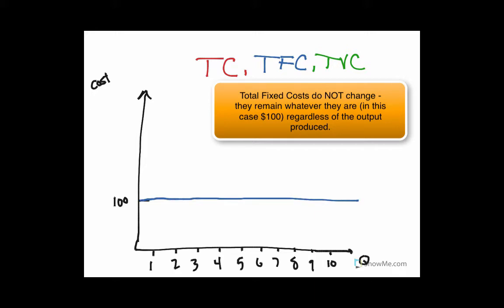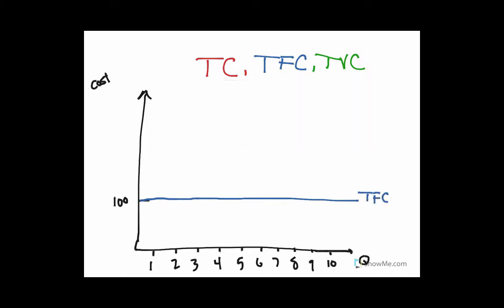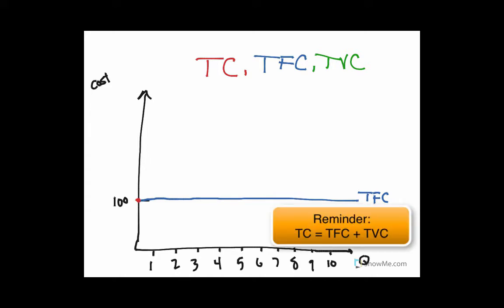And it's as simple as that — that's your total fixed cost. Total cost starts at the total fixed cost, because with no variable cost at 0, the total cost is just the total fixed cost. And then it goes up from there. It usually looks something like this. So we'll just say this is our total cost.